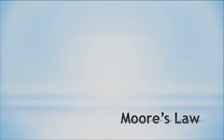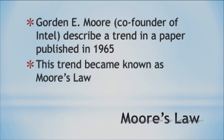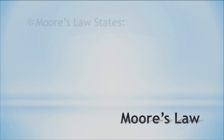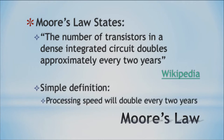Things are going to be changing soon because of something called Moore's Law. Moore's Law was created by Gordon E. Moore, one of the founders of Intel, and this law came about in 1965. Moore's Law states that the number of transistors in a dense integrated circuit doubles approximately every two years. Simply put, every two years processing speed will double.